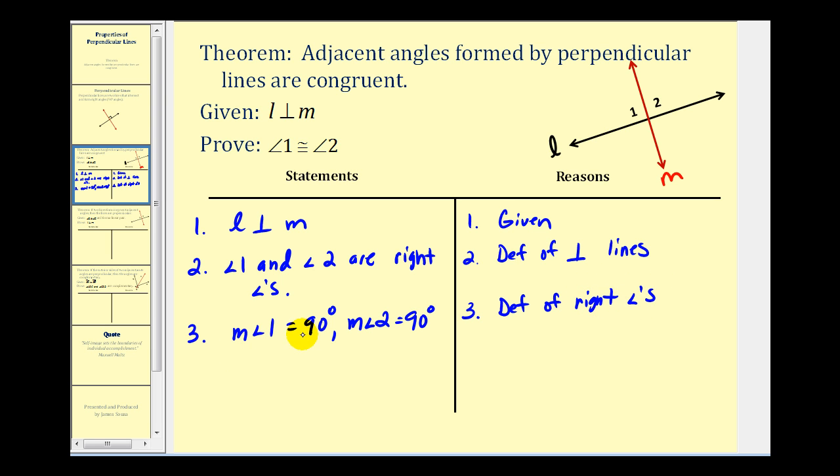And since the measure of angle one and the measure of angle two are both equal to 90 degrees, we can conclude that angle one is congruent to angle two, which is what we were trying to prove. This is by definition of congruent angles.